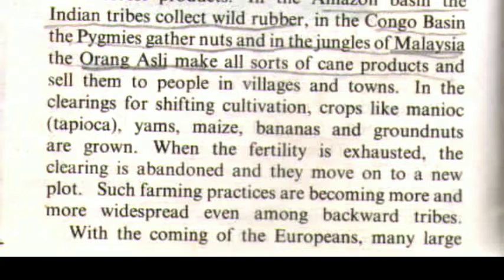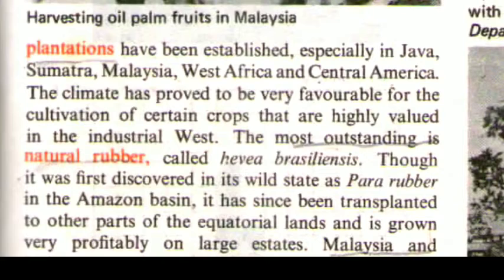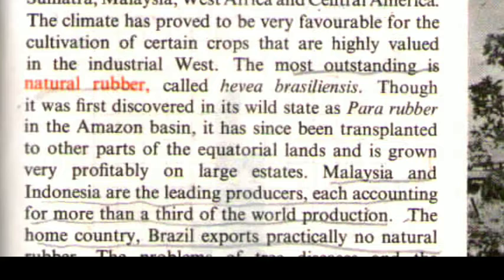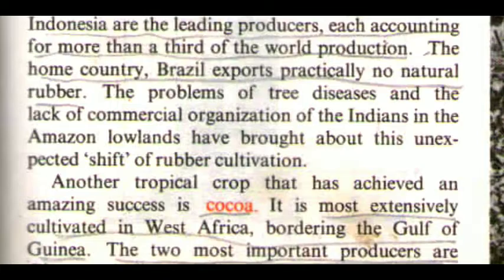In clearings used for shifting cultivation, crops like manioc, tapioca, yams, maize, bananas, and groundnuts are grown. When fertility is exhausted the clearing is abandoned and they move to a new plot. With the coming of the Europeans, many large plantations were established, especially in Java, Sumatra, Malaysia, West Africa, and Central America. The most outstanding crop is natural rubber, Hevea brasiliensis. Though first discovered as para rubber in the Amazon basin, it has since been transplanted to other equatorial lands. Malaysia and Indonesia are the leading producers, each accounting for more than a third of world production, while Brazil, the home country, exports practically no natural rubber.